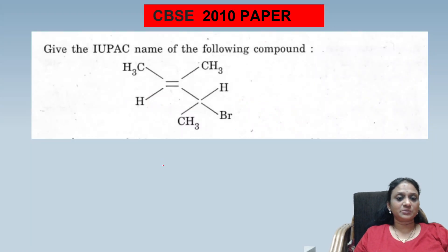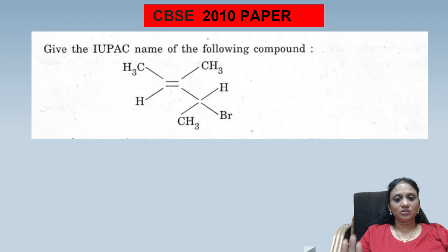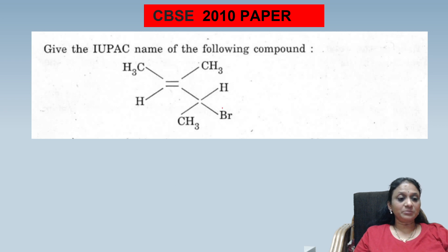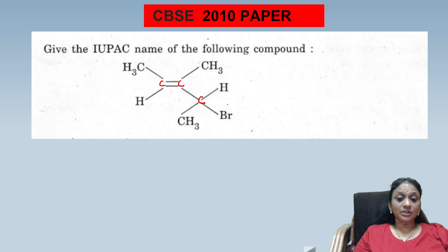Another 2010 paper question: find the IUPAC name of the following compound. IUPAC nomenclature is compulsory in every question paper. The compound given has three carbons with halogens attached. Remember that halogens are always substituents.